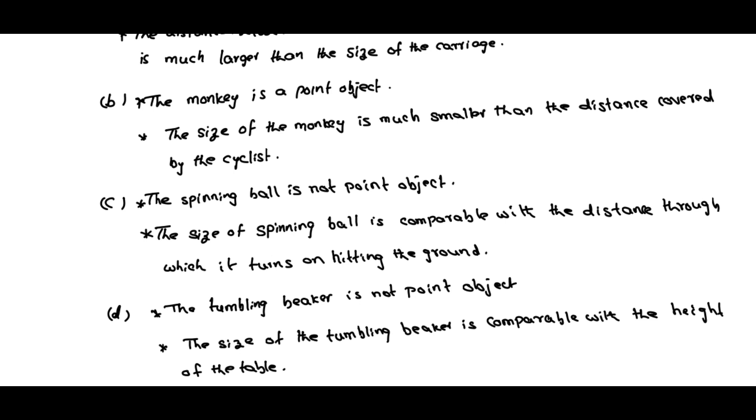The first A and B are point sized, because their sizes are negligible compared to distance. C and D, the spinning ball and the beaker, are not point sized because they are comparable in size. Thank you.